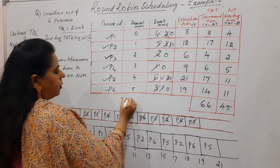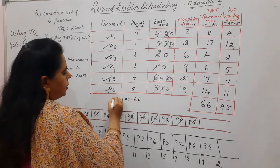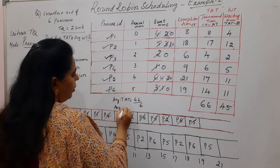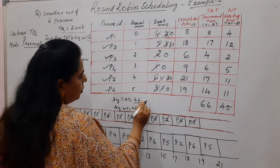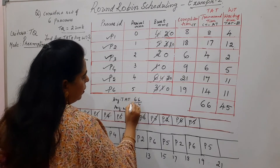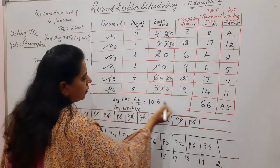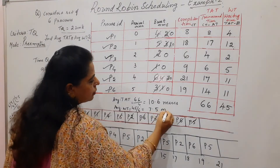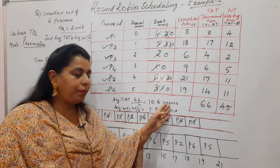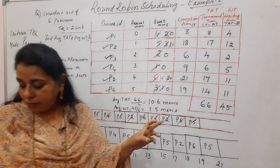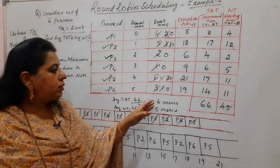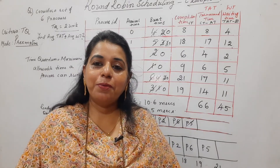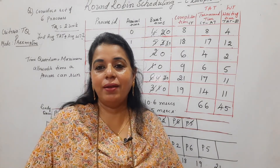Average turnaround time equals 66 divided by 6 = 10.6 milliseconds. Average waiting time equals 45 divided by 6 = 7.5 milliseconds. These are the final answers for this Round Robin Scheduling numerical. I hope this session is useful. Please like, share, and subscribe to my channel. Thank you, bye bye, take care.